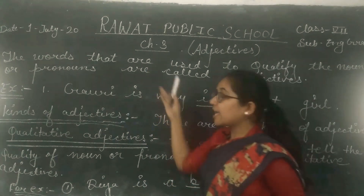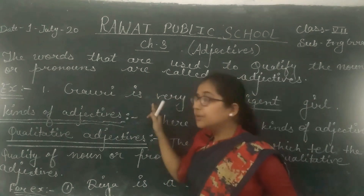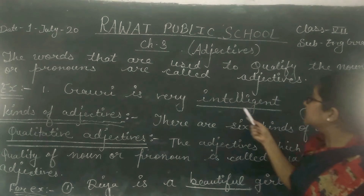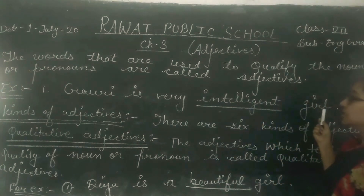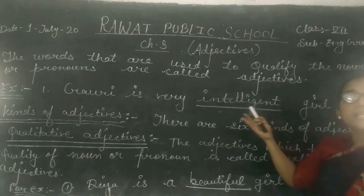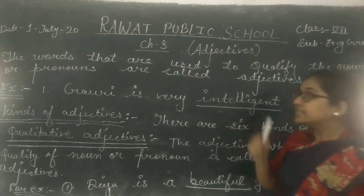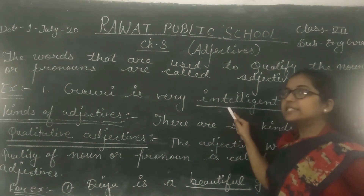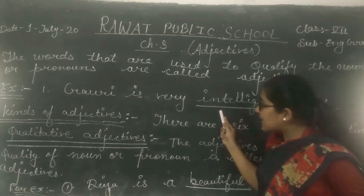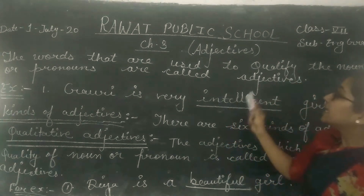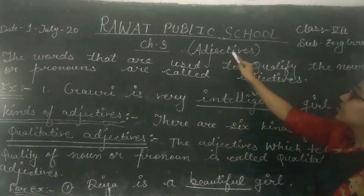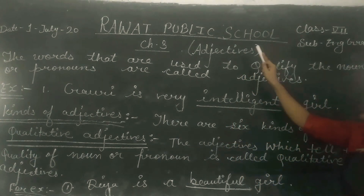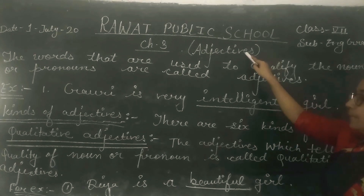I have already told you. So, 'Bobby is a very intelligent girl.' So where is the Adjective? Here — intelligent. Intelligent is the Adjective.